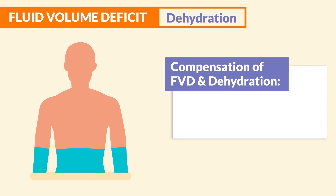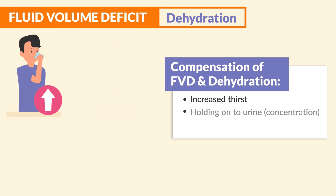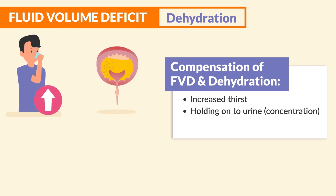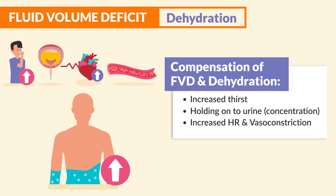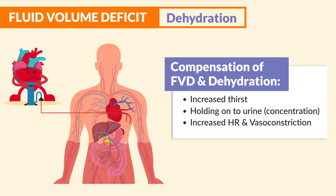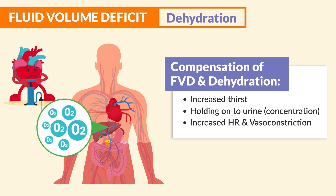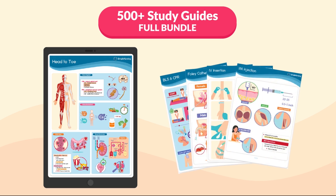Before we go into manifestations, a quick note on compensation for fluid volume deficit and dehydration. The body tries to balance itself by sending signals to increase fluid intake, so we'll see increased thirst, concentrated urine as the body holds on to fluid, and increased heart rate and vasoconstriction. The body is trying to compensate for decreased fluid volume by pumping the little blood it has at a faster pace to perfuse and oxygenate the tissues.